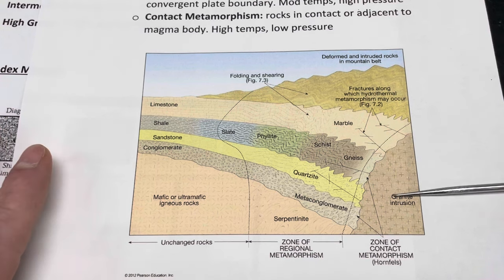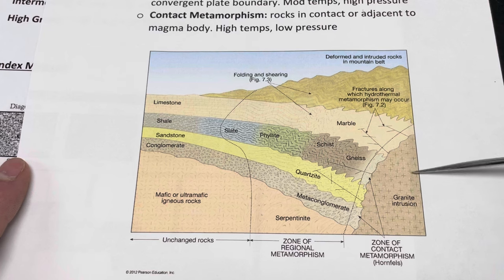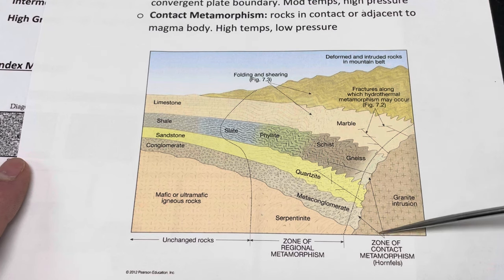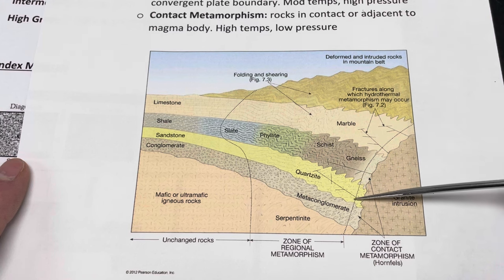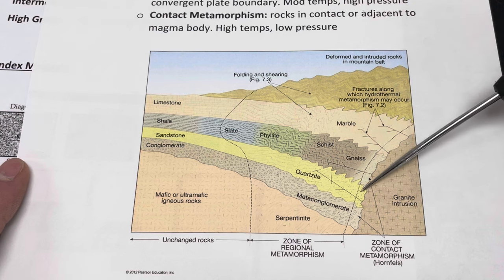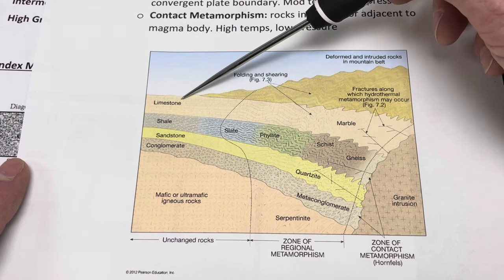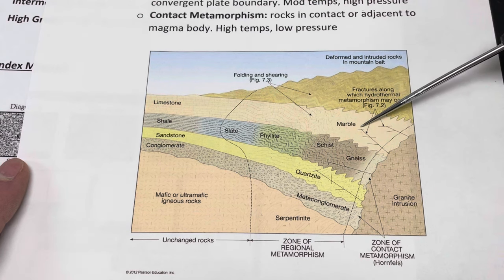This diagram shows the magma body in contact with the surrounding rocks. What we might see is this magma cools into granite. While this magma was still molten, it changed the existing rocks. The limestone in proximity to the magma has been changed into marble.